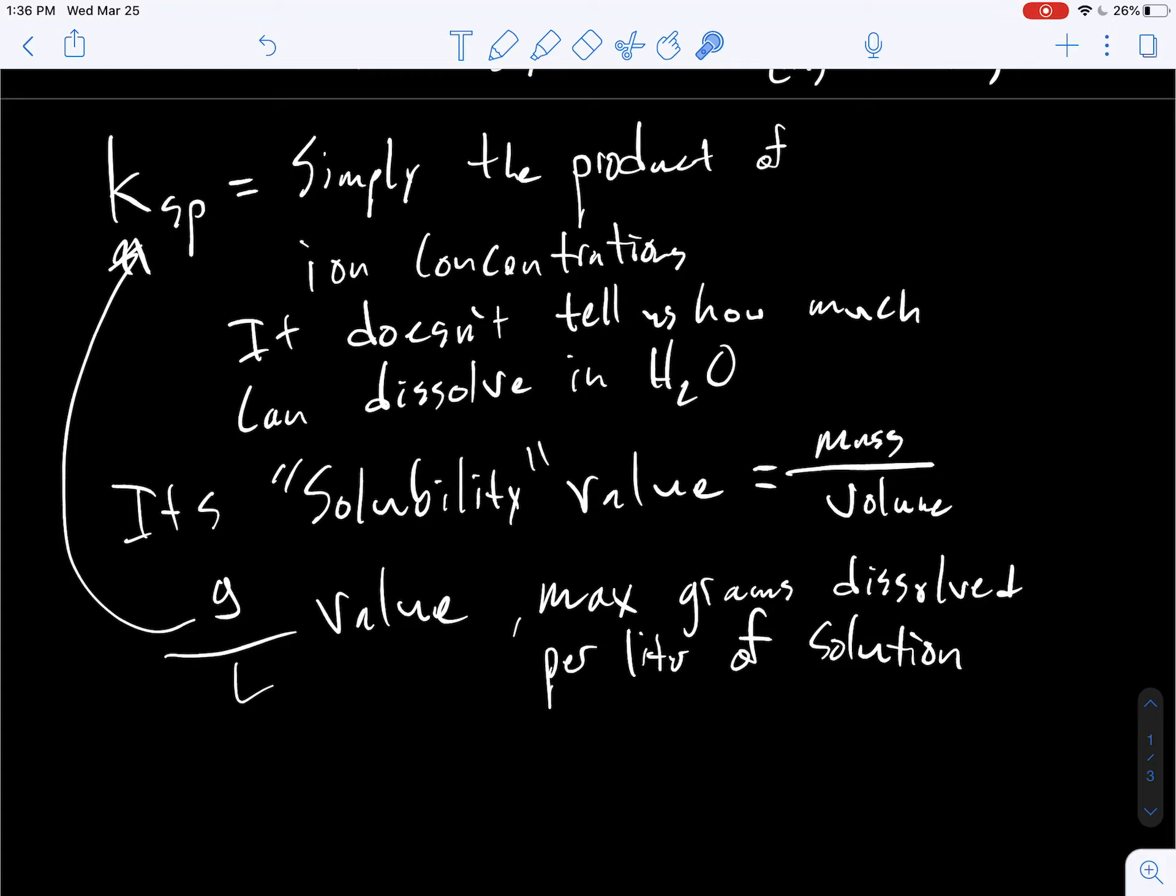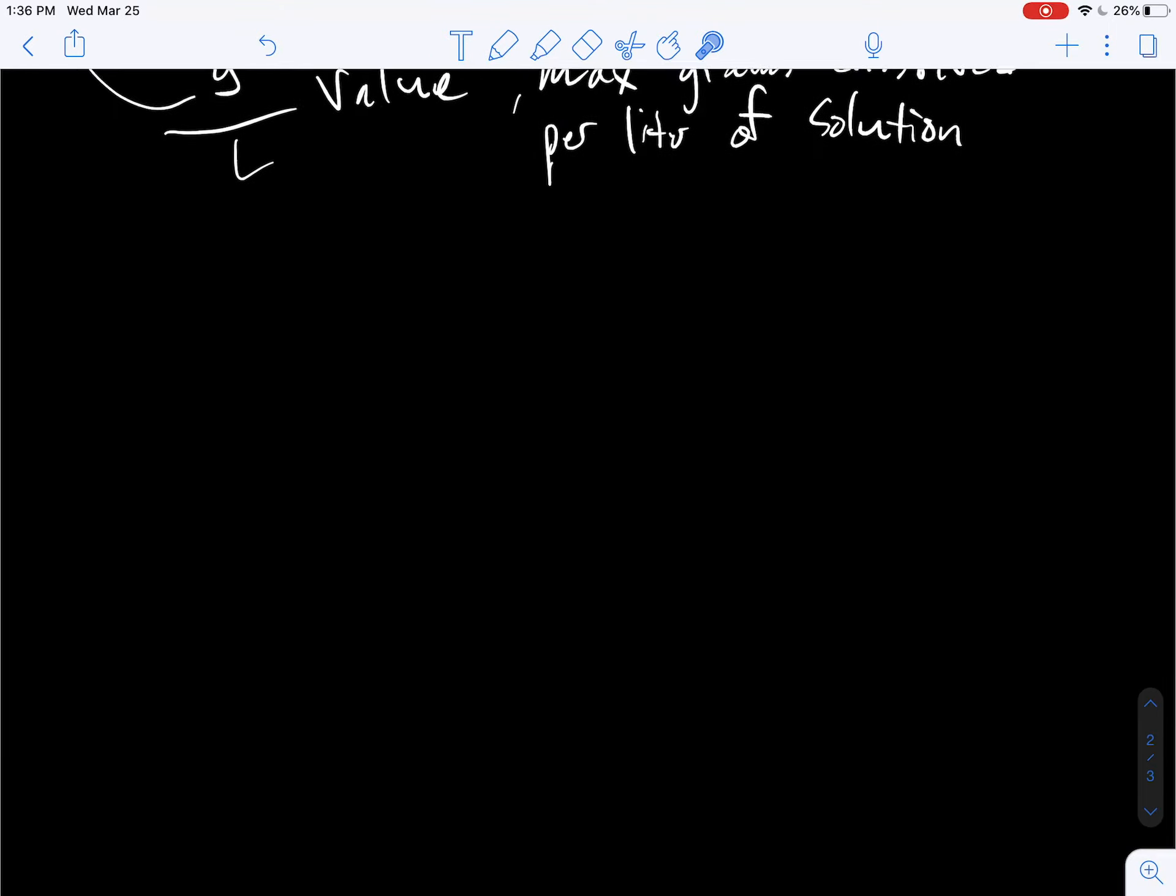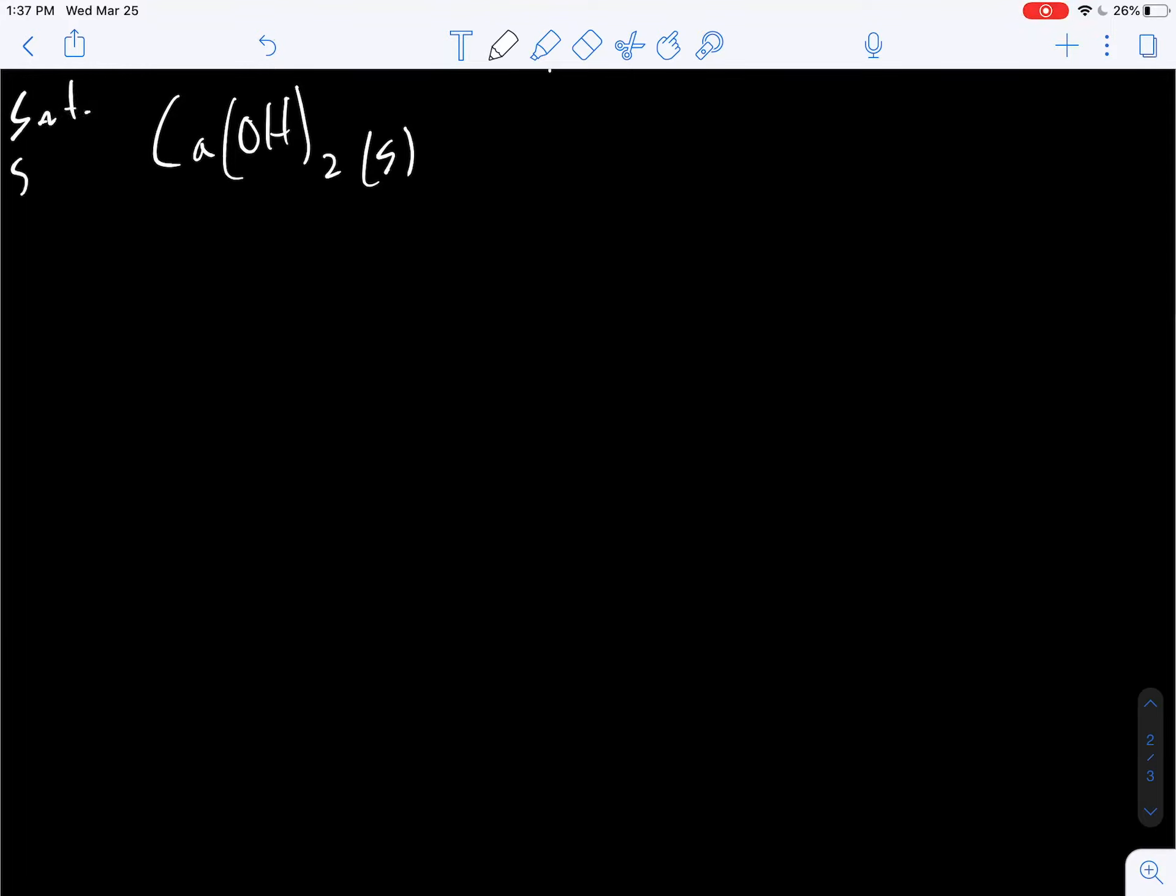So we're going to go through the calcium hydroxide example. Let's come down here and do that. Okay, let's consider calcium hydroxide. And this is a solid. And remember, we're going to consider a saturated solution. Because we know this is at equilibrium. So we've reached equilibrium. And I put this in the water, and this is going to produce a certain amount of this and 2 moles of hydroxide.